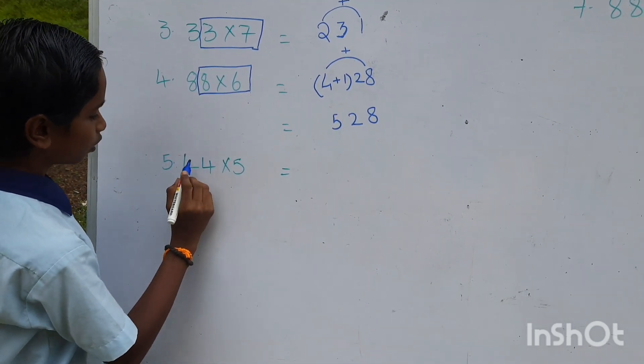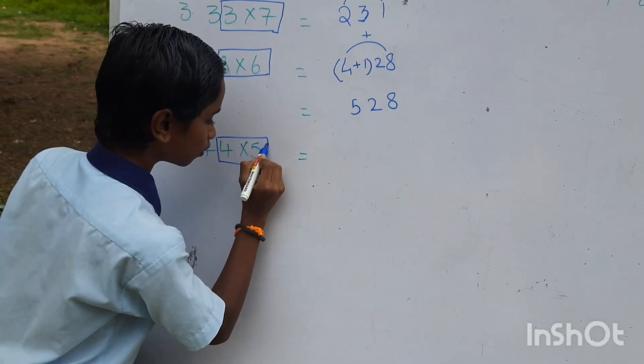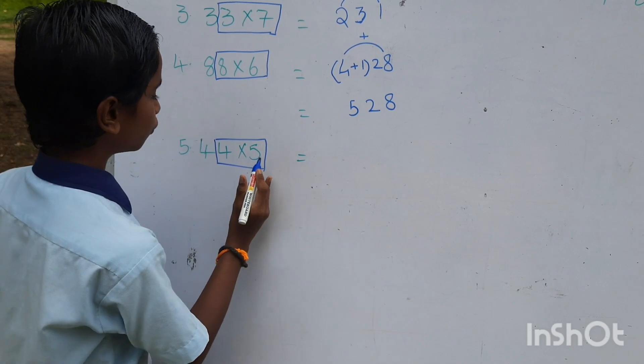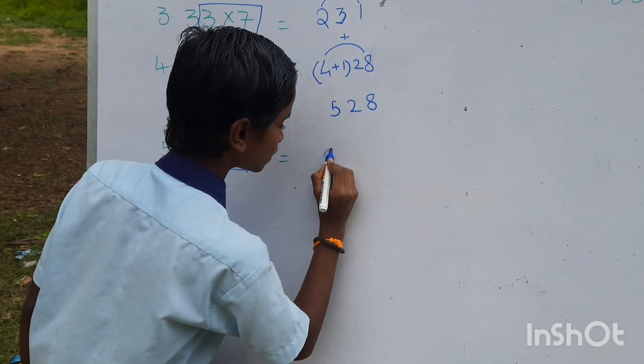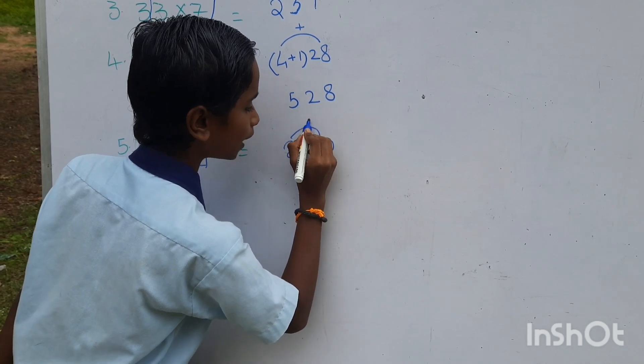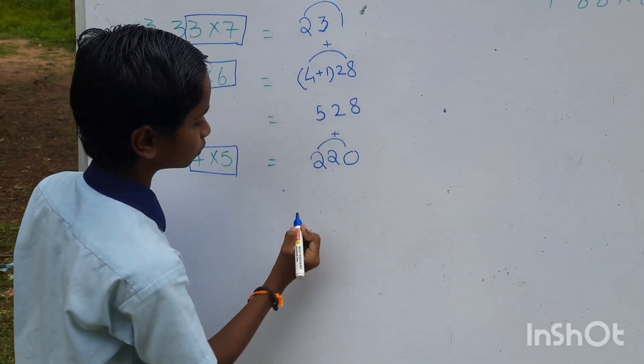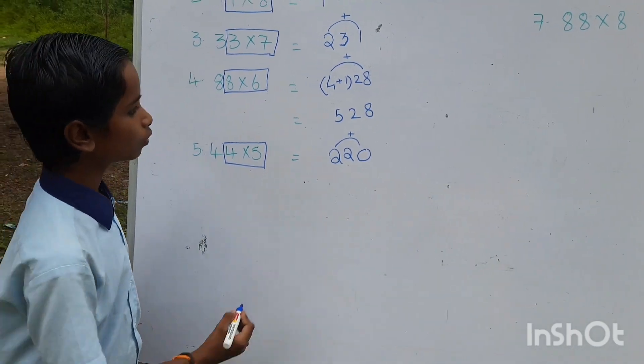Fifth one, 44 into 5. We want to multiply 4 and 5. 4 5s are 20. We want to add 2 and 0. The middle value is 2. 44 5s are 220.